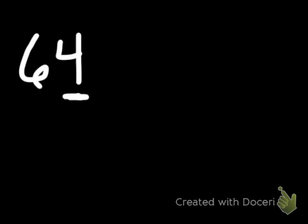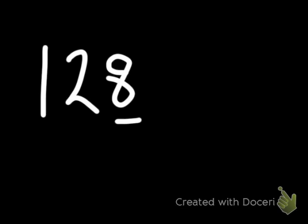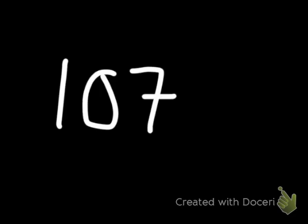64 is divisible by 2 because 64 is an even number. I look at that last digit, and that tells me 64 is an even number. 128 is also divisible by 2 because the last digit tells me it is an even number. 107 is not divisible by 2 because that last digit tells me it is not an even number — it's an odd number. 2 is only divisible into even numbers.